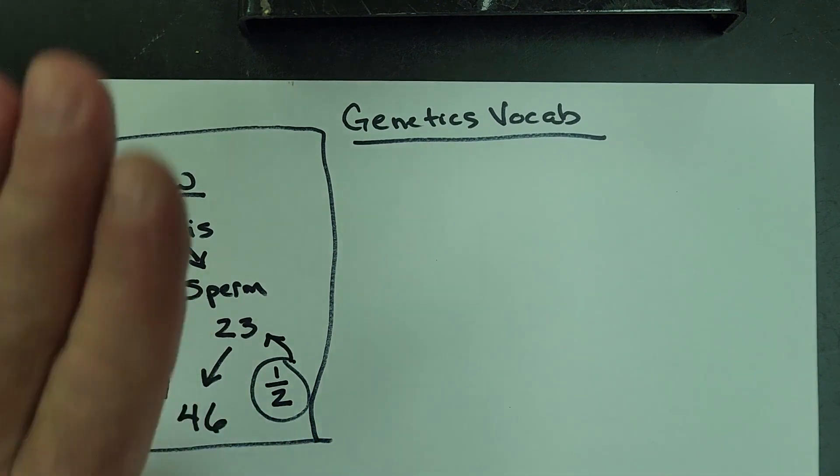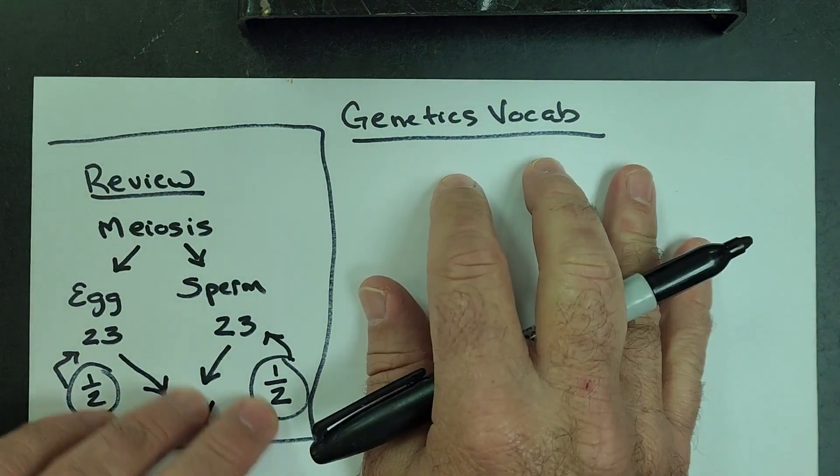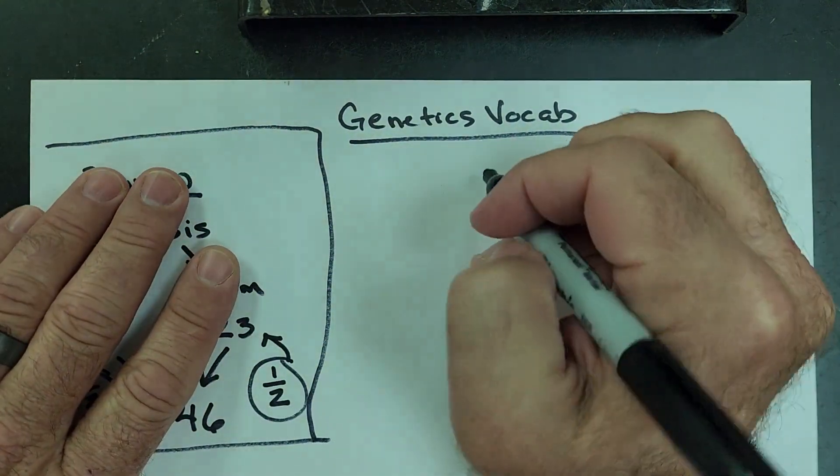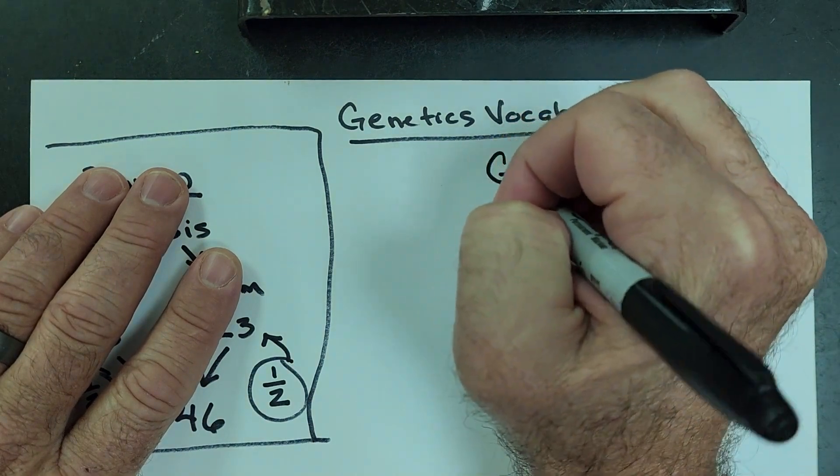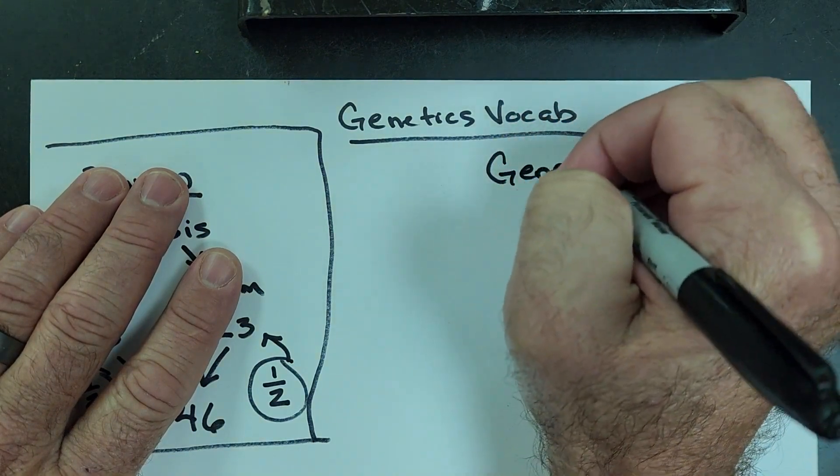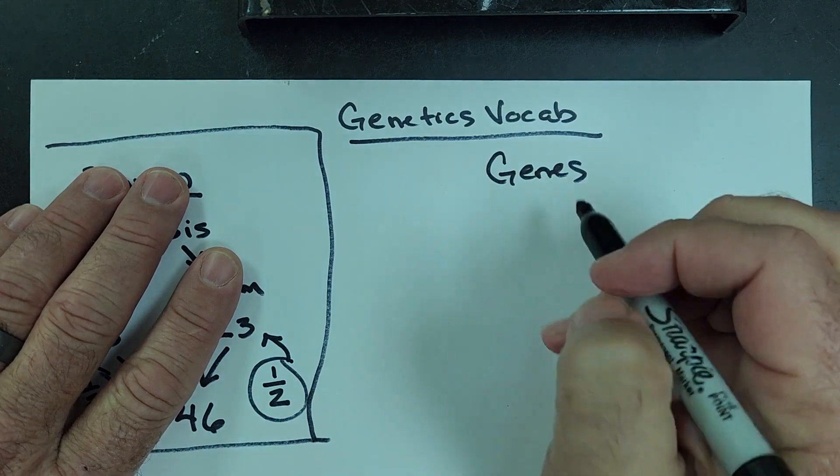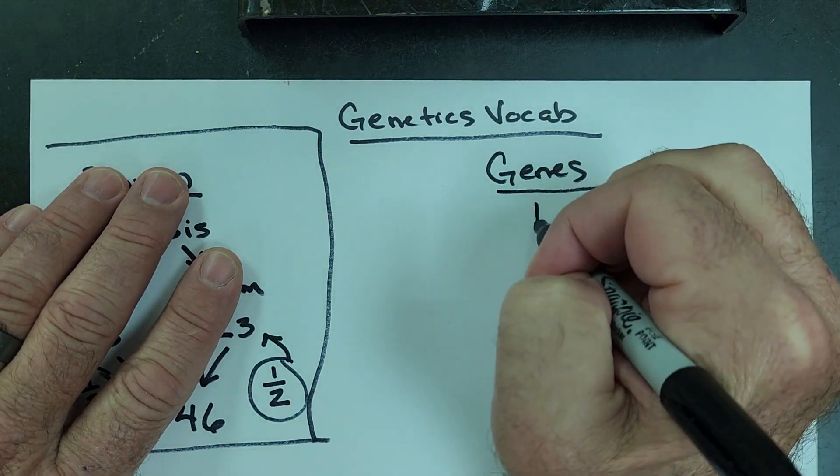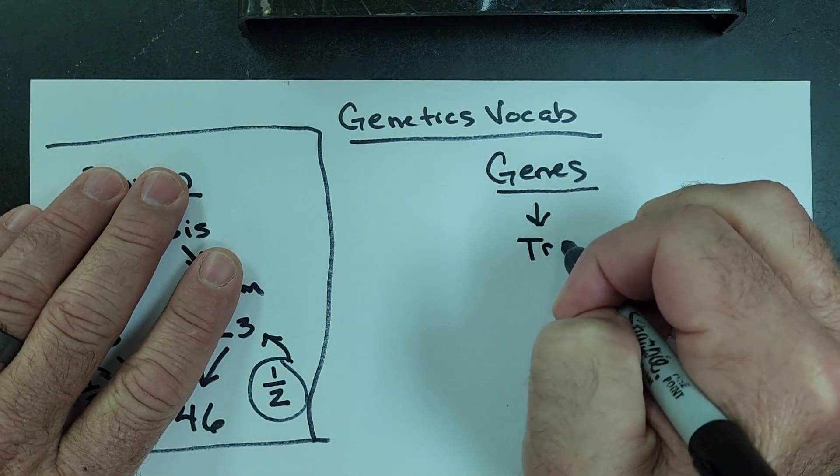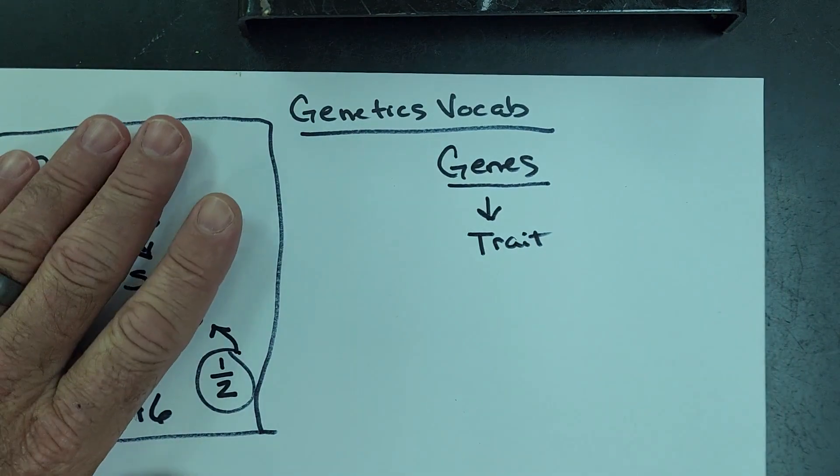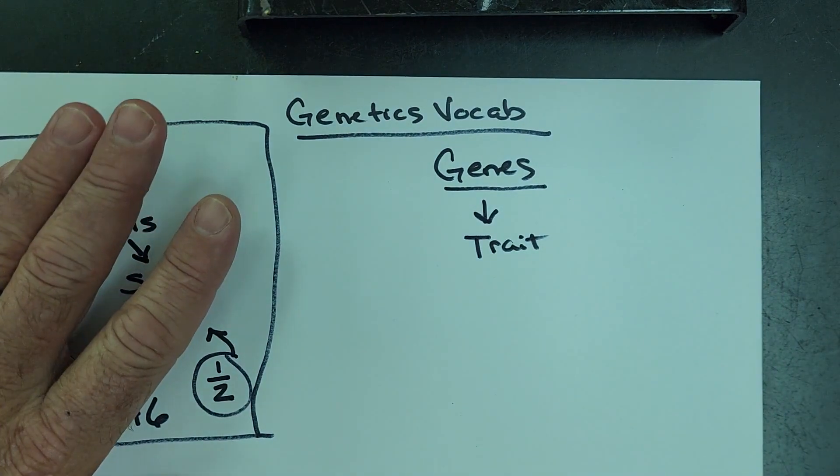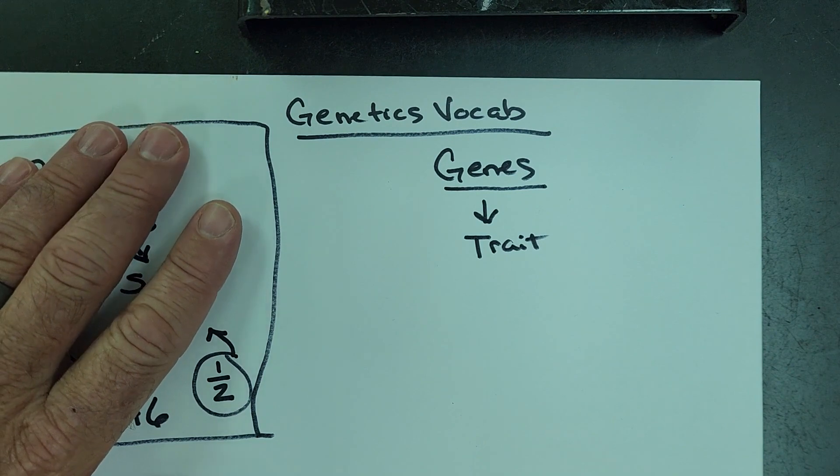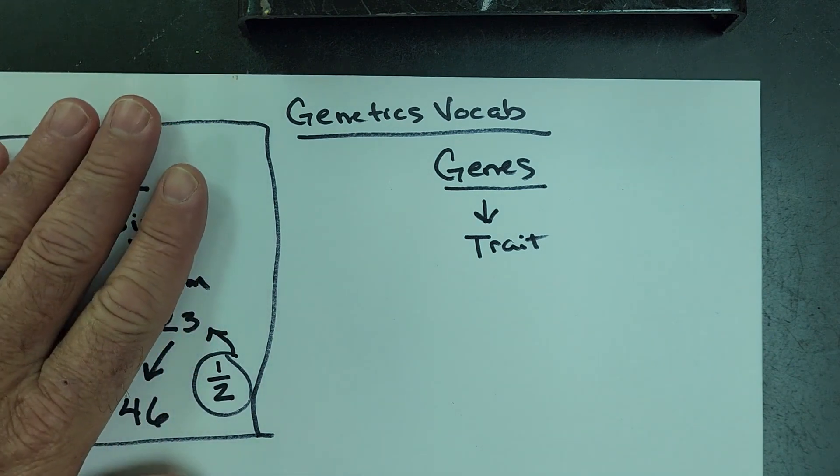In this unit, we're going to use that to introduce some new vocabulary. So we've already been talking about genes. Genes are the pieces of DNA that code for a specific trait. And traits can be different things like skin color, eye color, hair color, height, personality.